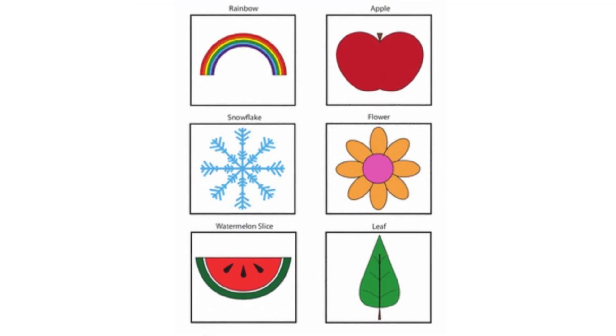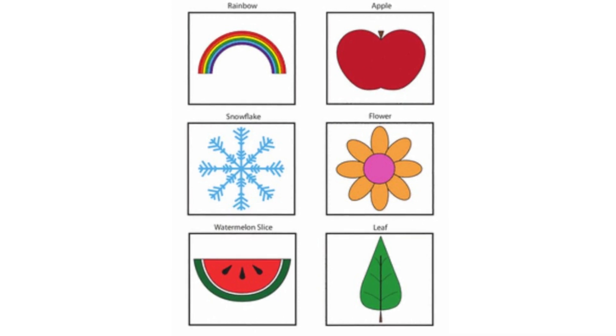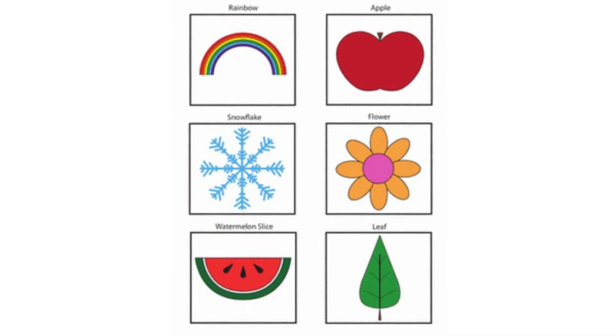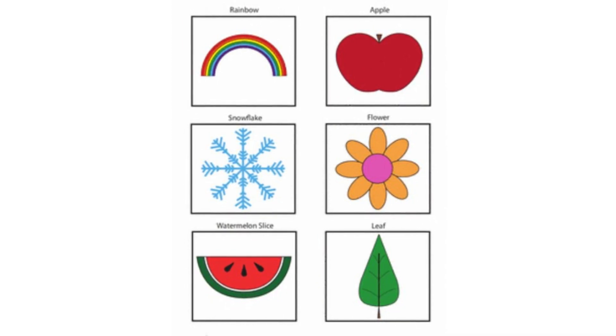A bow, apple, snowflake, flower, watermelon slice, and leaves are some other examples of symmetry.